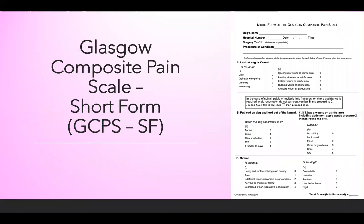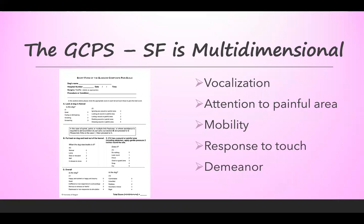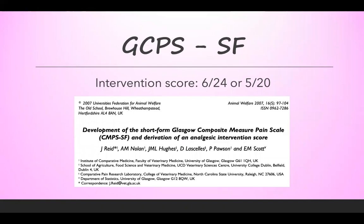The Glasgow Composite Pain Scale short form is another pain scale — a bit more complicated than the Colorado State Pain Scale. It is multidimensional, with different categories: observing the animal in the kennel, interacting with the animal by taking it out, touching the painful area, and an overall assessment. It includes vocalization, attention to the painful area, mobility, response to touch, and demeanor. It has an intervention score of 6 out of 24, or 5 out of 20 for non-ambulatory animals, backed up by a research study.